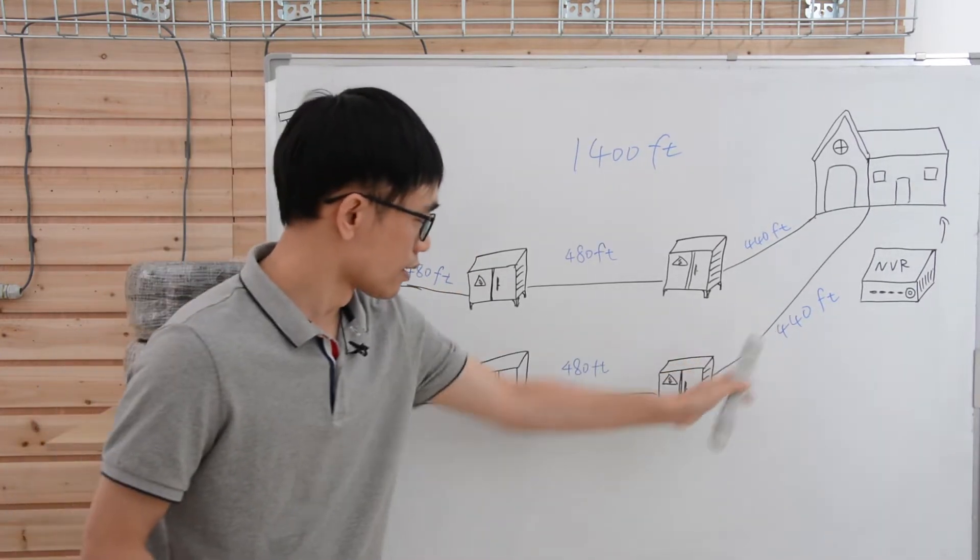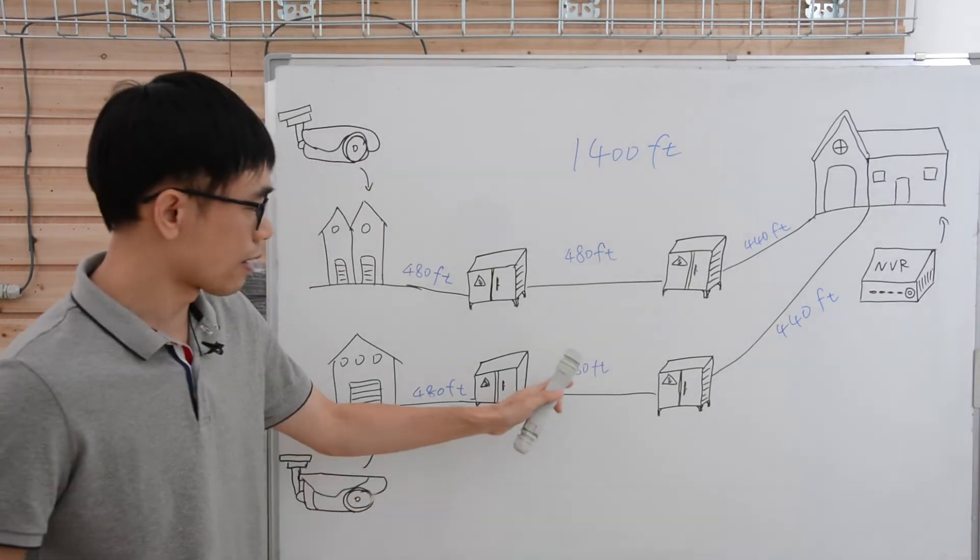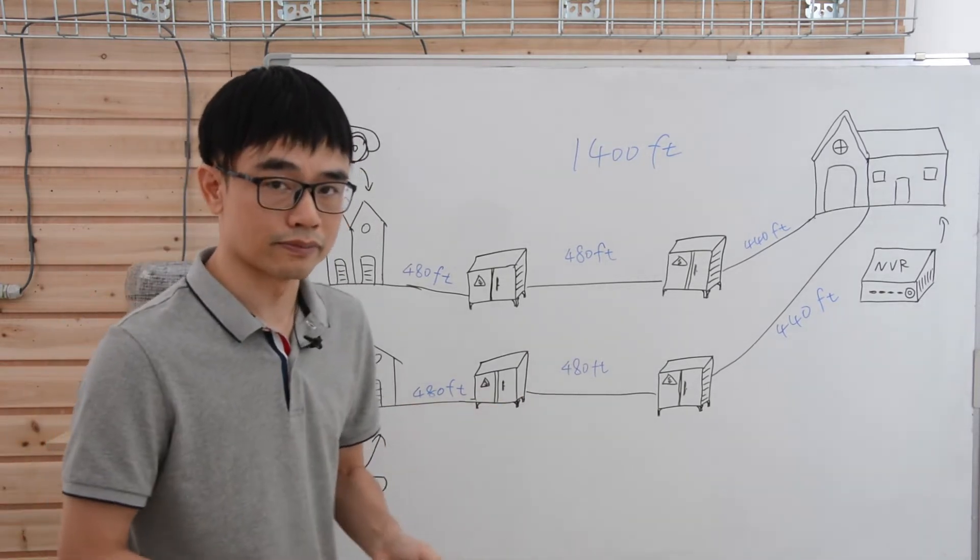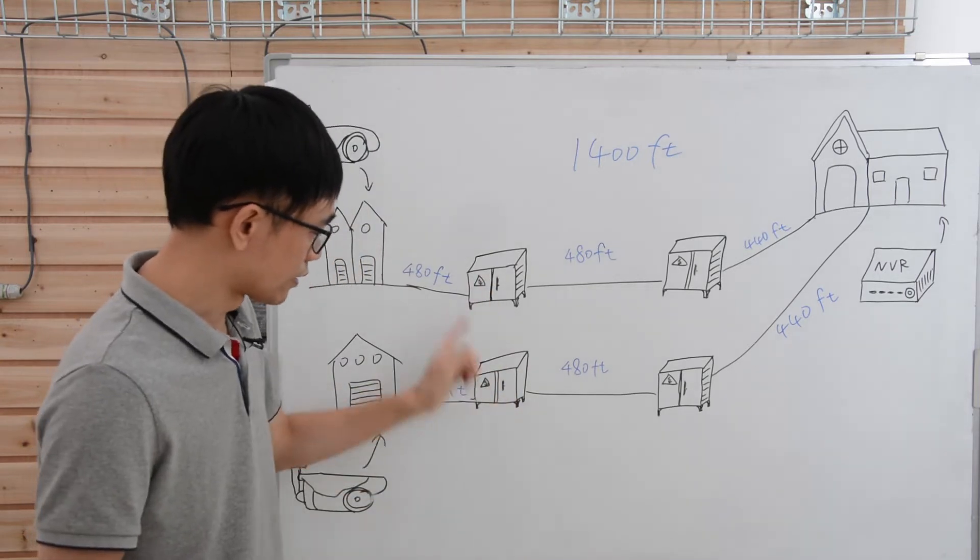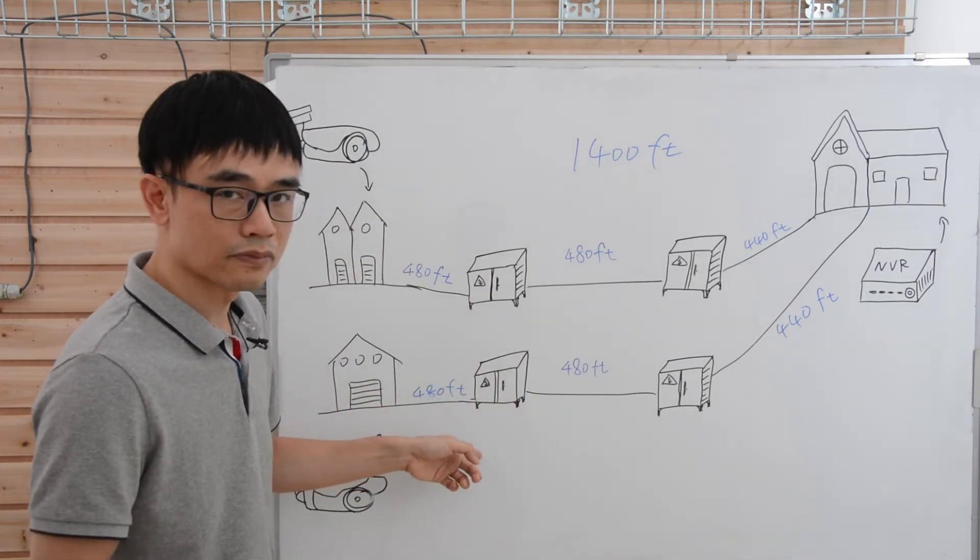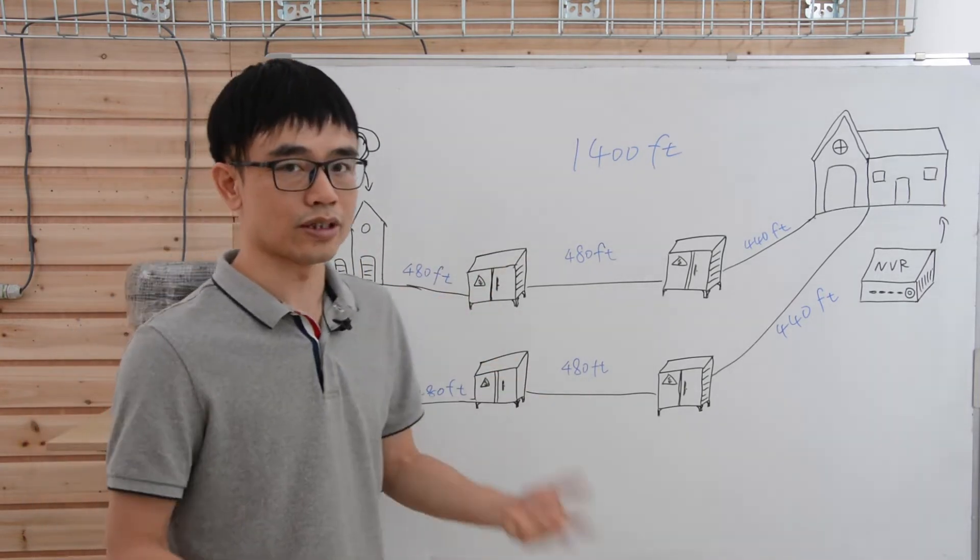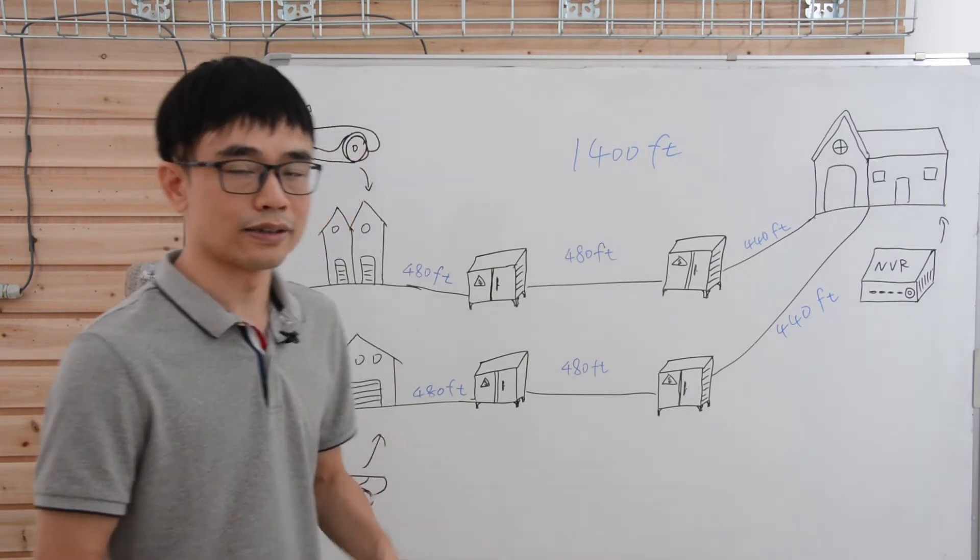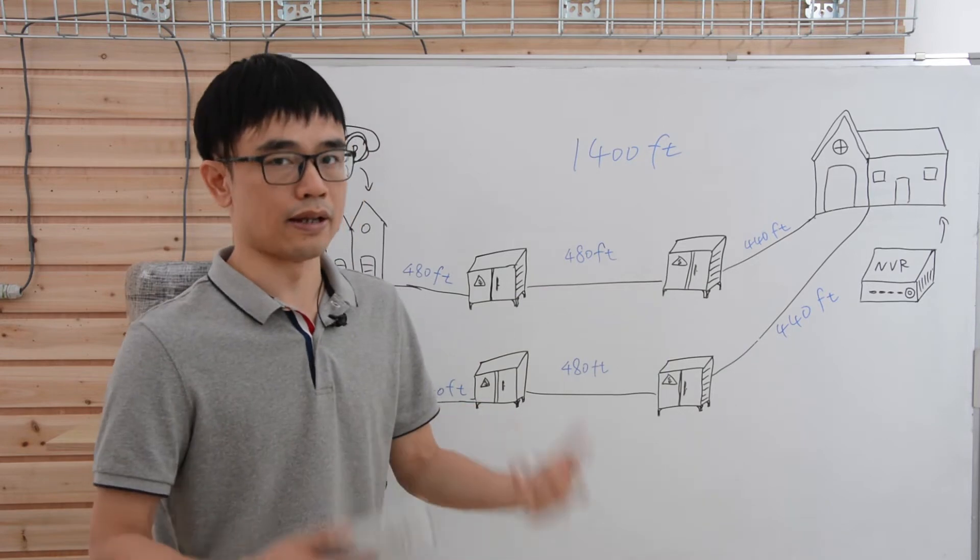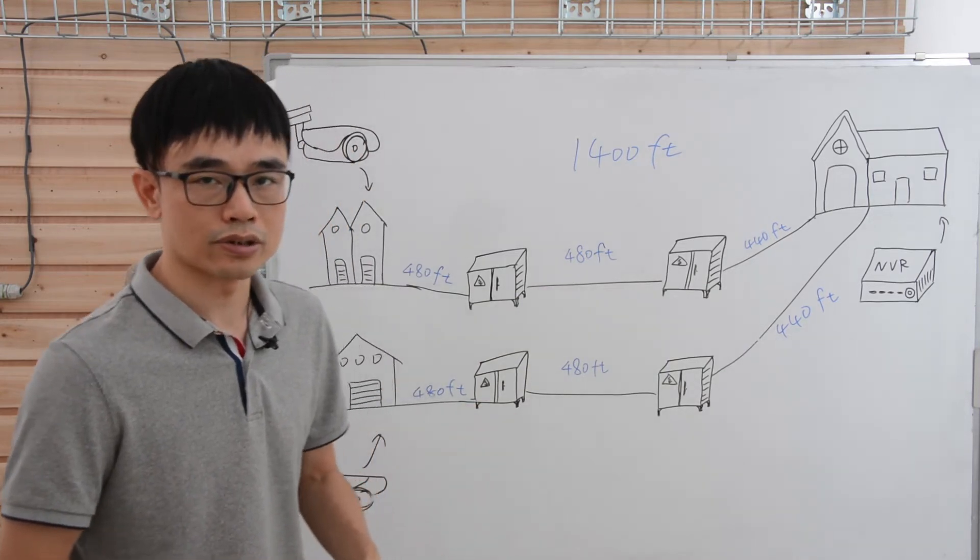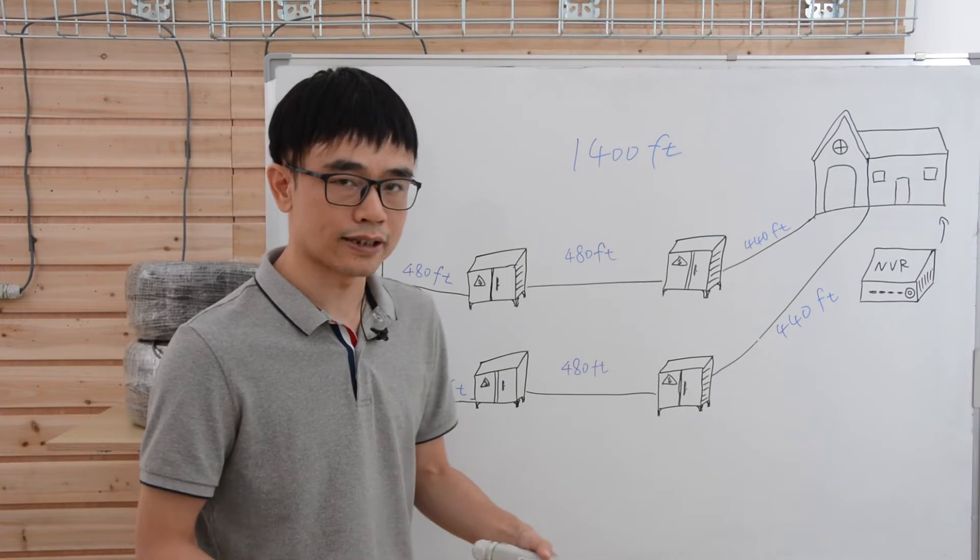And from the first PoE enclosure to the second one, there is about 480 feet, even further. So we also cannot place the second PoE extender in the enclosure here. That means all the enclosure is useless for our setup. He needs to bury the PoE extender under the ground. And in the future, if we want to diagnose the issue, it could be a problem to dig up all the PoE extenders.